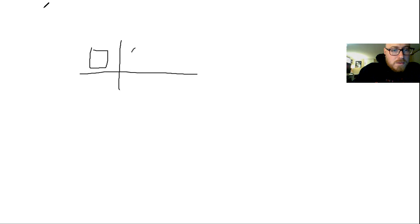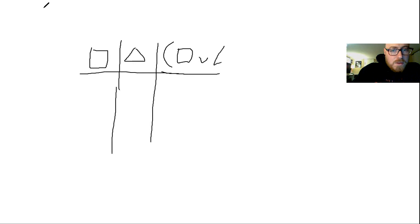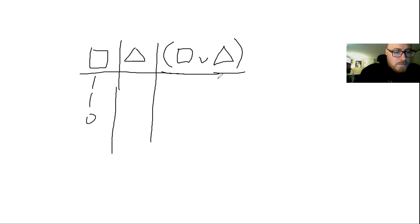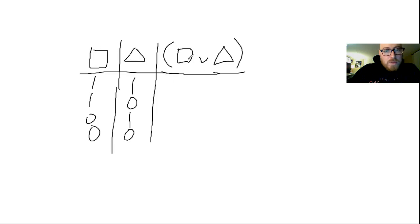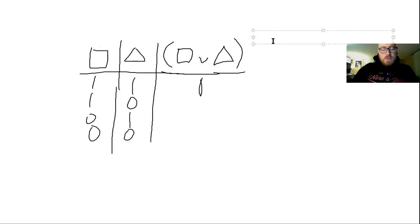Next we will do disjunction. So we've got box, we've got triangle, and then we're going to do either box or triangle. If some well-formed formula box and some well-formed formula triangle are both true, then either box or triangle is true. Unless stated otherwise, we always assume that the disjunct is inclusive. A lot of times when we use disjunctive statements — either/or — we use it exclusively, meaning it can't be both. But logically speaking, that's not what this means here.